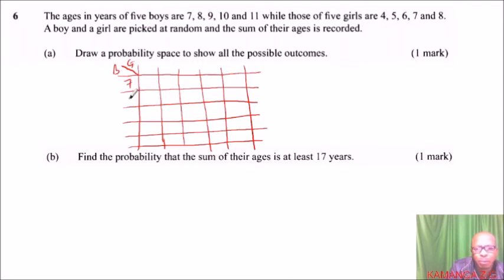So, we have 7 for boys, 8, 9, 10, and 11. For girls, we have 4, 5, 6, 7, and 8. So, what you do, you add the age of a boy and a girl, and that will be able to get 7 plus 4, that will give us 11. 7 plus 5, that is 12. This will give us 13. This is 14. 7 plus 8, that will give us 15.